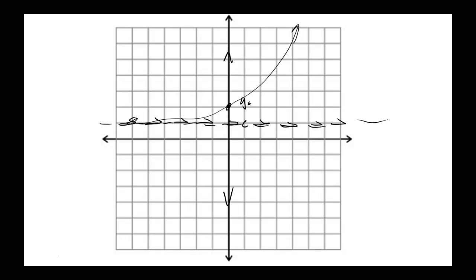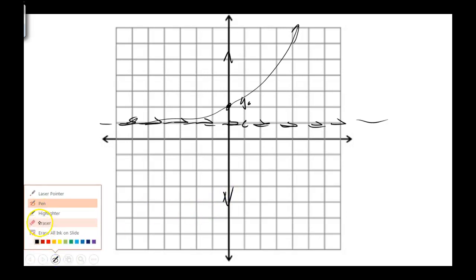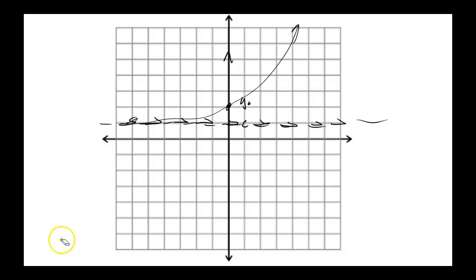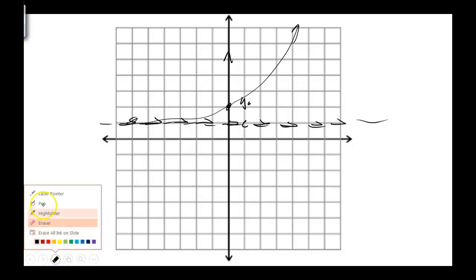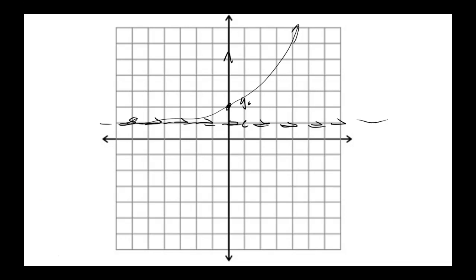In the third situation — one arrow points toward c and one points away — the critical point is attracting from one direction but repelling from the other. That's called semi-stable: attracting from below and repelling from above, or vice versa.